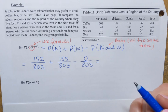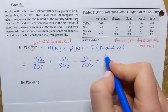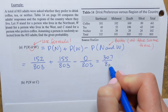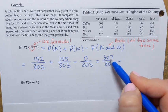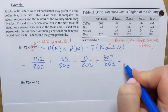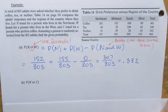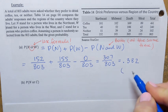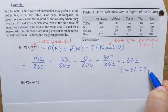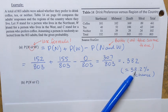Adding the fractions: 152 plus 155 minus 0 equals 307, over a denominator of 803. So P(N or W) = 307/803. Converting to a decimal by dividing 307 by 803 and rounding to three decimal places gives 0.382, which is approximately 38.2%. That's the chance that a randomly selected person is from the northeast or from the west.